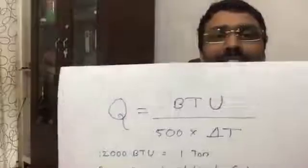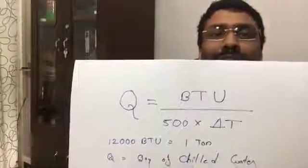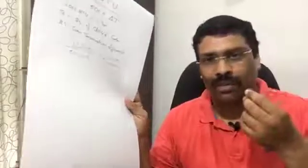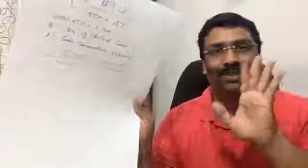I will conclude this video. Today you studied the equation Q = BTU divided by 500 into delta T — a very simple equation to find out the quantity of chilled water requirements for any FCU, AHU, fresh air AHU, whatever it should be. Thank you so much for watching. Subscribe to my channel and click the bell icon so you get notified about my next video directly on your mobile or laptop. Thank you for watching. Bye-bye.